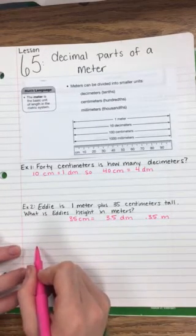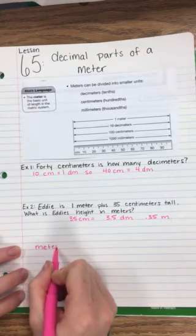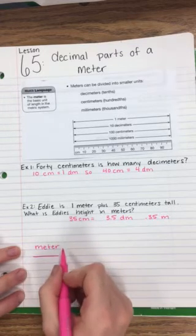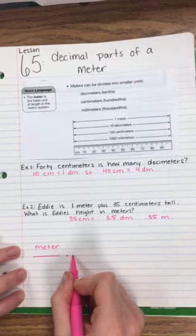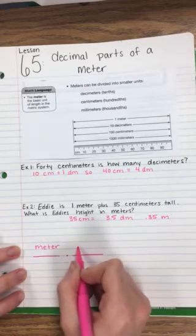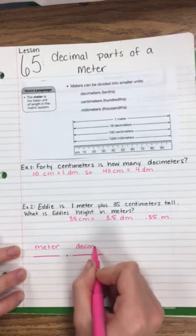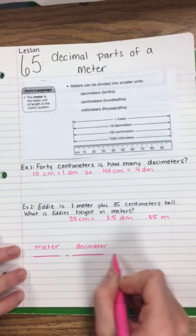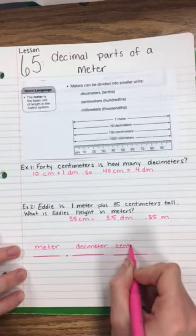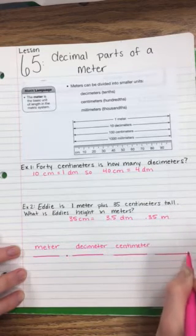Okay, so here on the bottom I want you to write one meter. Draw a line under it like here, and then put your decimal point, and then do three more lines. You're gonna write above the lines: decimeter, then your next line is going to be centimeter, and then your last line is going to be millimeter.